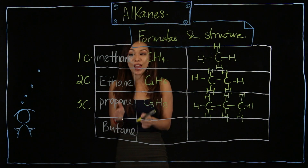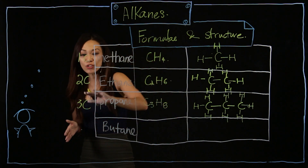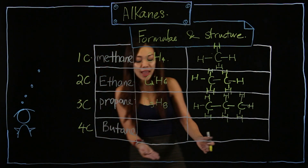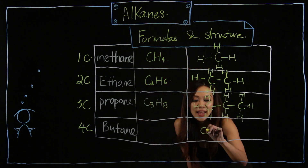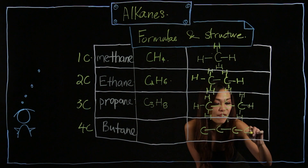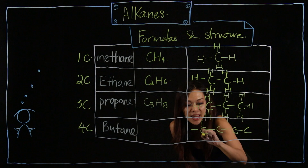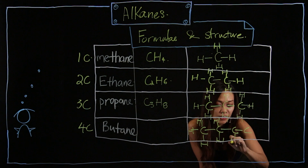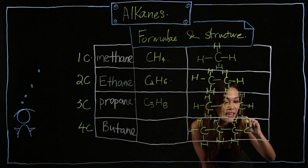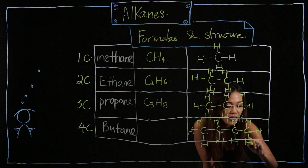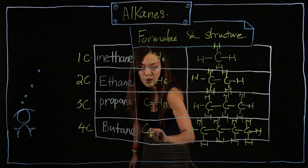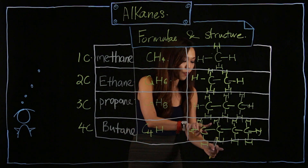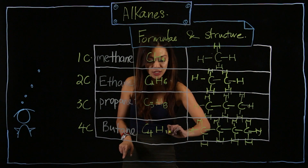Last but not least, we have butane — four C. Draw four carbons in a chain. Every carbon has four lines — one, two, three, and four. Insert the H atoms around them. Counting the hydrogens: one through ten. So the formula is C4H10.